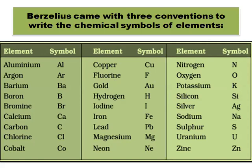The third convention is to take either the first letter or the first letter and any other letter of the Latin name of the element. For example, copper — the Latin name is Cuprum, hence its symbol is Cu. The Latin name of silver is Argentum, hence its symbol is Ag. The Latin name of potassium is Kalium, symbol K. The Latin name of lead is Plumbum, hence its symbol is Pb, and so on.